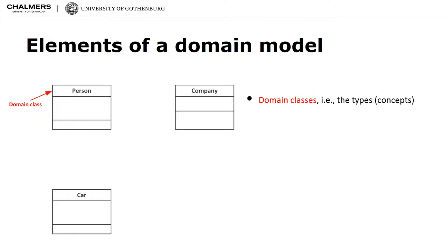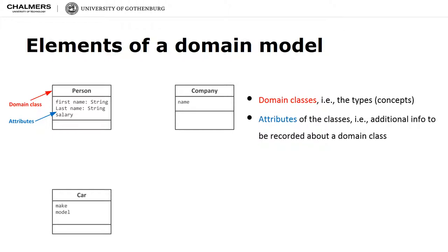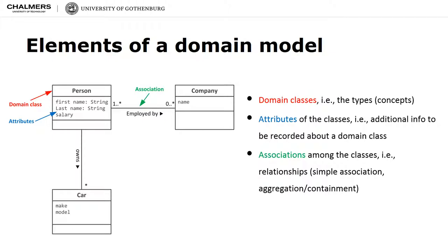You can have attributes within domain classes and attributes provide additional information to the classes. Classes can be linked via associations and associations can be of different types like a simple use association or aggregation. You can have multiplicities at the association ends and typically an association also has a name specifying what the association is about.